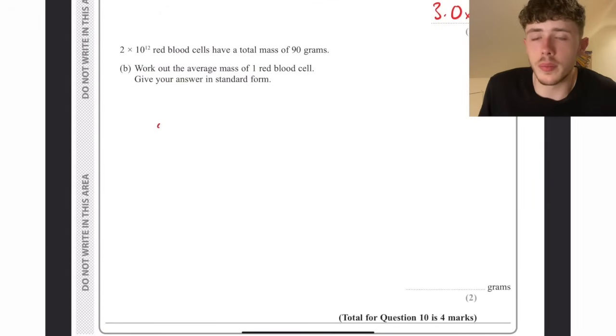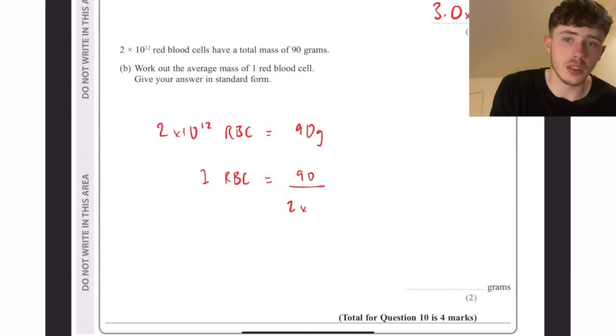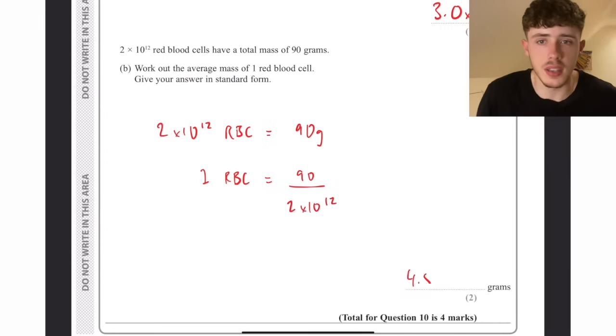A similar kind of question with standard form. 2 times 10 to the 12 is going to equal 90 grams, and we want to work out one. Because we are dividing by 2 times 10 to the 12 on the left-hand side, we need to do that to the right-hand side. Put it in the calculator, 4.5 times 10 to the minus 11.